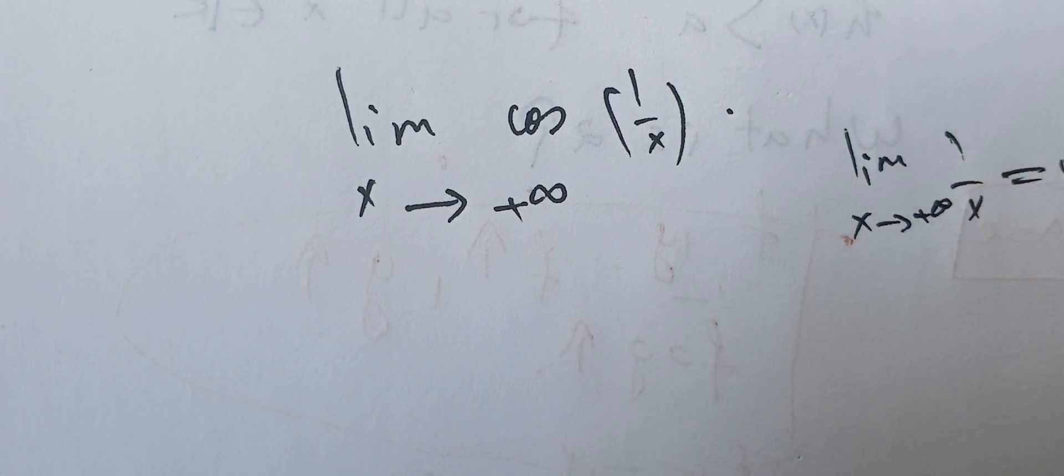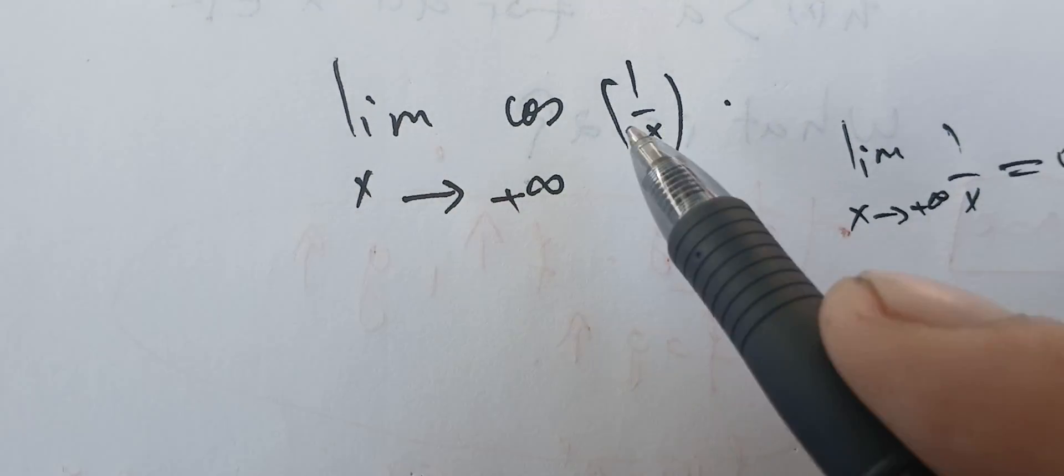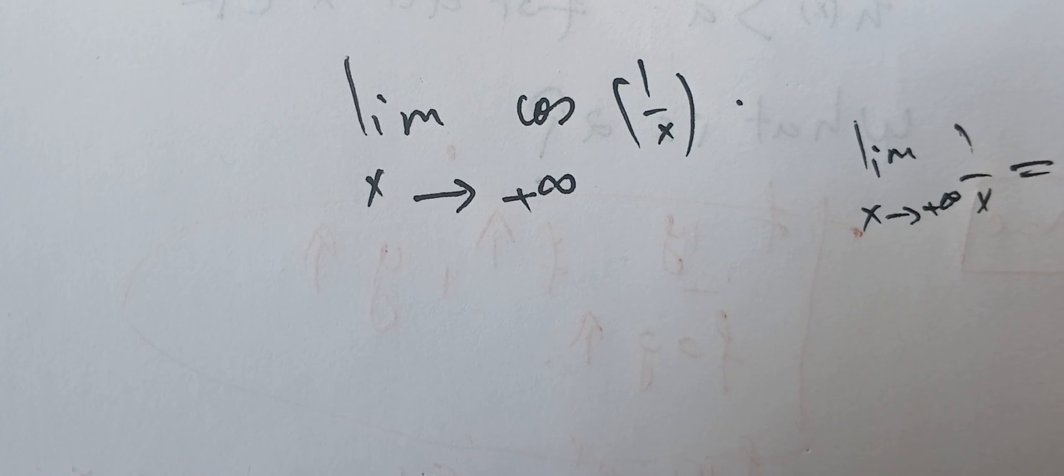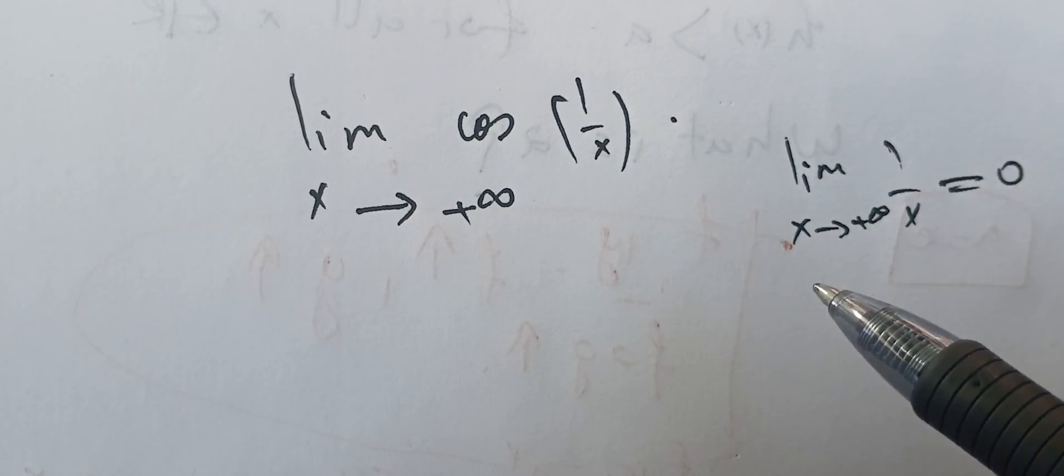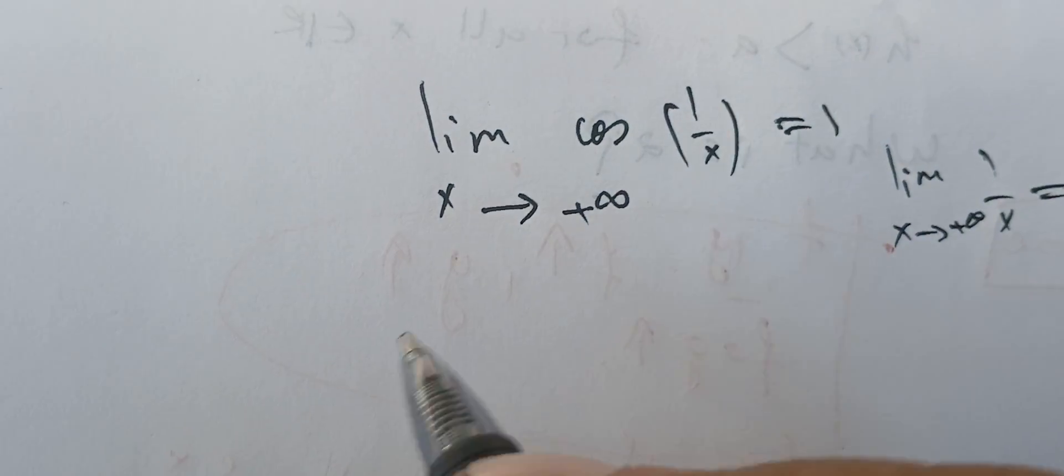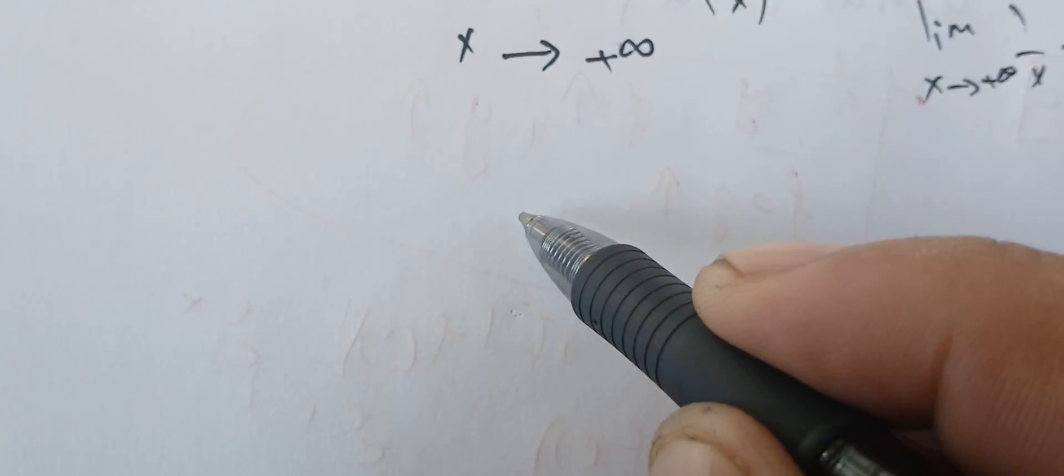One key idea here is that the cosine is a continuous function, and therefore the cosine of 0 is 1. This means that this limit is 1.